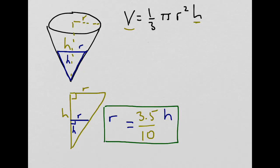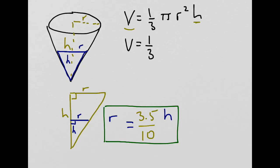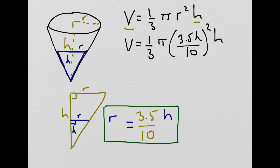We can see that radius and height are related, and we can substitute that value for r into our volume formula. Doing that gives us volume equal to 1/3 π times (3.5h/10) squared times h. Working that out and substituting 3.14 for π, we eventually get volume equal to 0.1282h³. This gives us what we want — we've expressed volume as dependent on just one variable, the height.